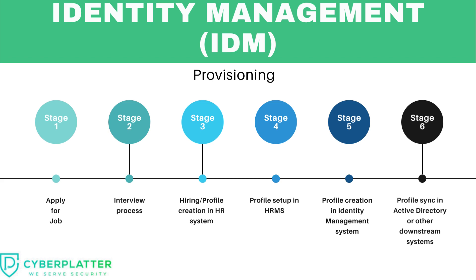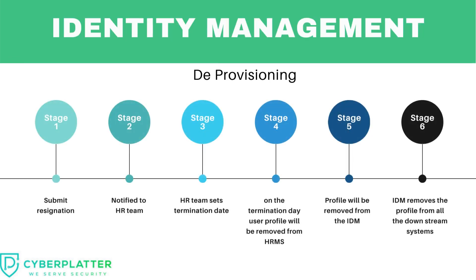Deprovisioning takes place when an employee resigns from the company. It starts when the employee submits the resignation letter to the manager. The manager notifies the HR team, and the HR team sets the termination date. On the final day, the HRMS system removes the profile from the HRMS database, a scheduled job gets triggered, and the profile is removed from the identity management system. Identity management then removes the profile from all downstream systems. That's the deprovisioning process.